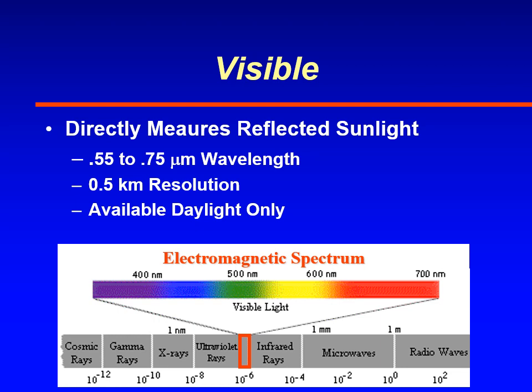Visible satellite imagery measures solar radiation or sunlight — the sunlight that's being reflected off of objects in our Earth's atmosphere and also from the surface of the Earth. There are sensors on GOES satellites that are looking at particular wavelengths, specifically 0.55 to about 0.75 microns, and that's what we call visible sunlight. That's what our eyes are attuned to.